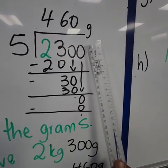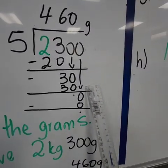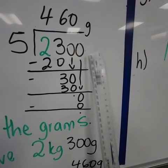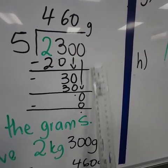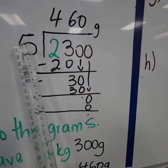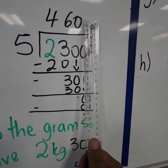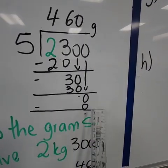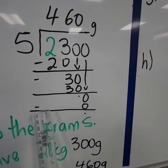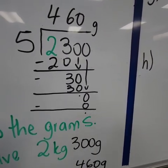And before we can conclude, we need to see if there's something left to bring down. And yes, it is a 0. We bring it down. We say 5 into 0 or 0 divided by 5. It will give us 0. 5 times 0 is 0. And then 0 minus 0, obviously, is nothing.